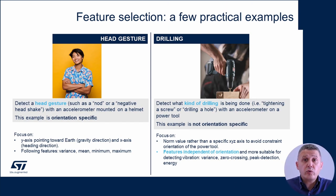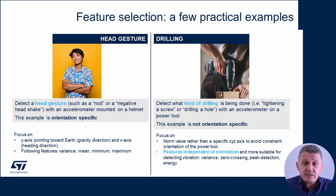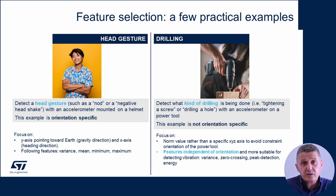Let's continue with two examples using data from an accelerometer. In the example on the left, we want to understand head gestures, so we select features that are orientation-dependent — for example, the minimum and maximum value of the accelerometer on a particular axis like X or Y. In the example on the right, we want to be orientation-independent: we want to understand if a power drill is tightening or untightening a screw, so we select orientation-independent features like the peak value or energy value of the norm of the XYZ axes.